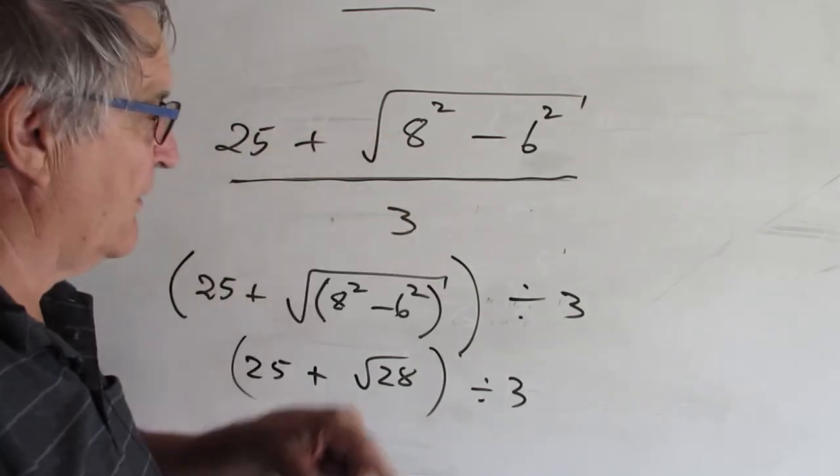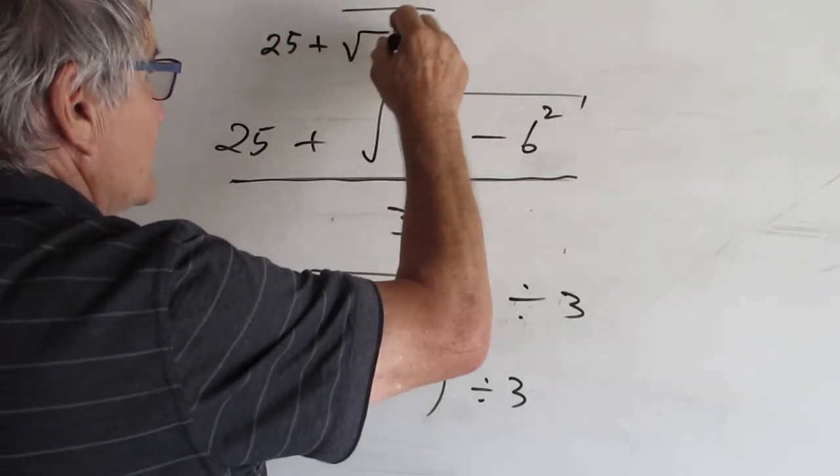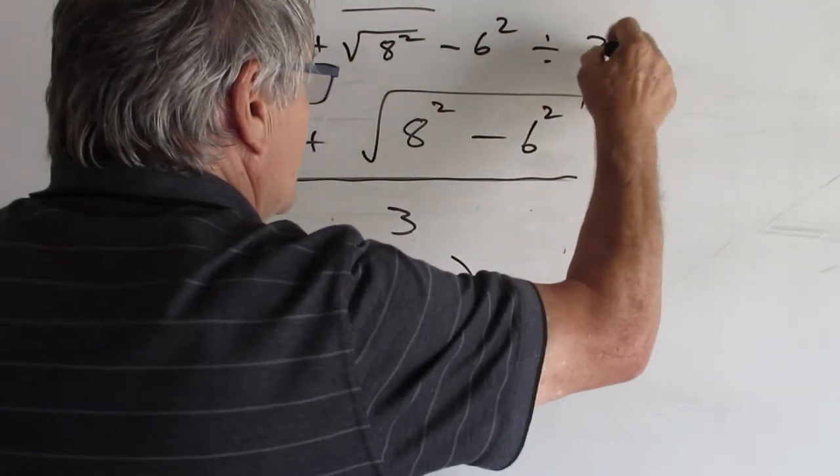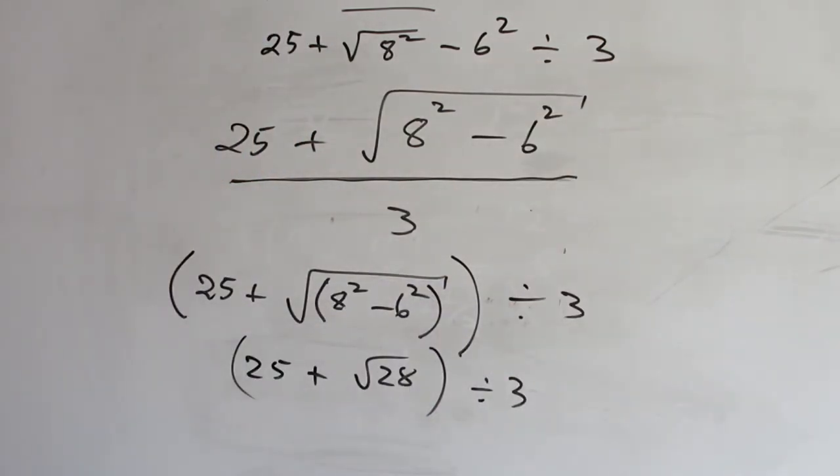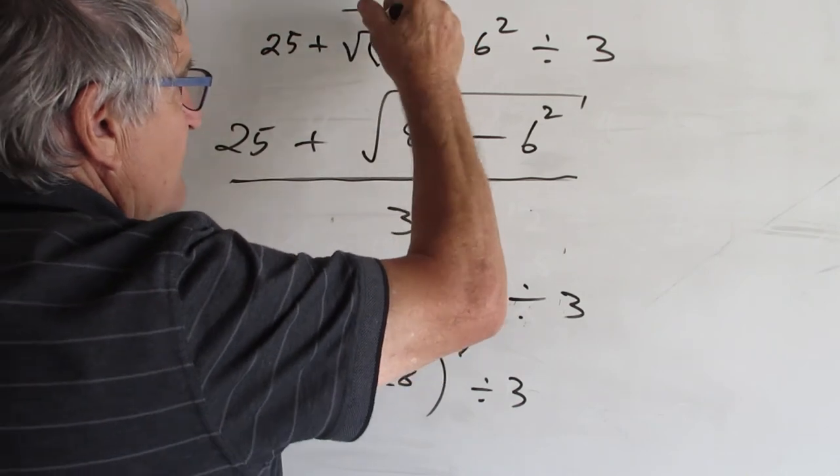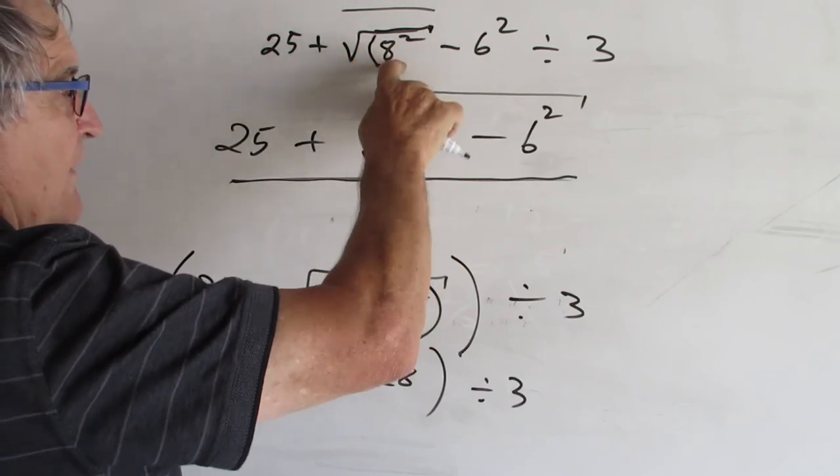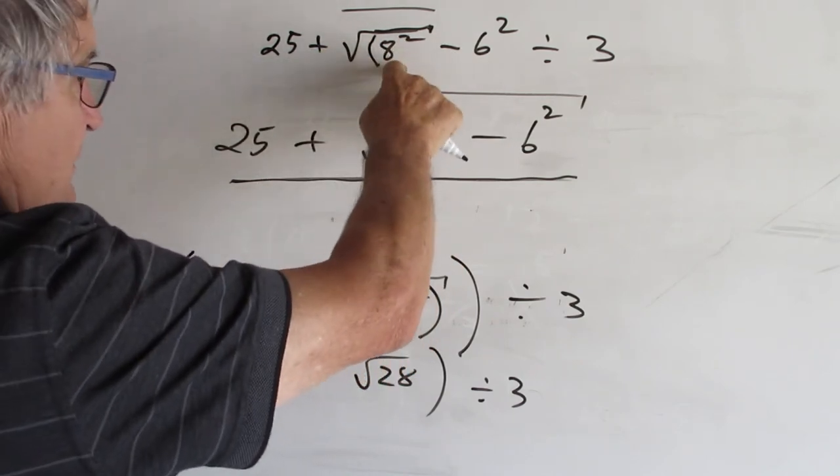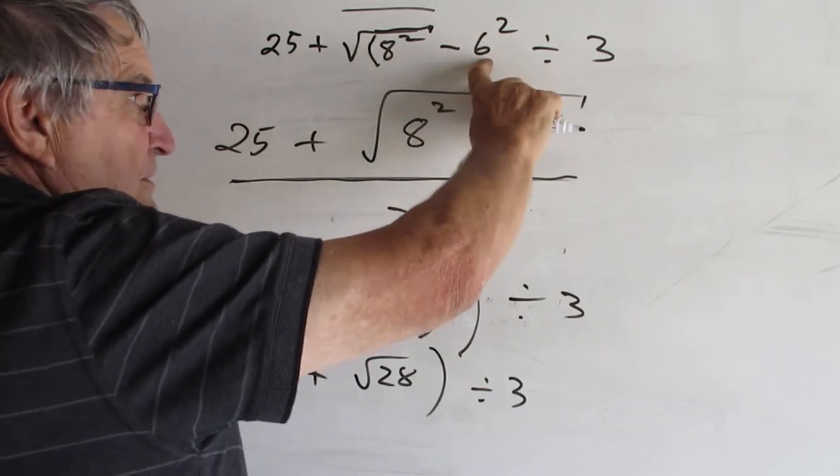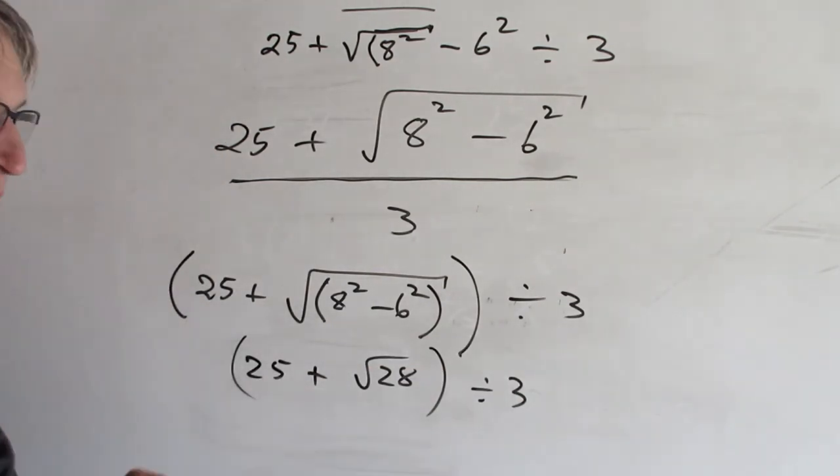You put that in the calculator as you say it, 25 plus the square root of 8 squared minus 6 squared divided by 3 is going to be one awful mess. The calculator is going to finish the square root at that point there, because it won't incorporate this. So the square root of 8 squared is 8. 25 plus 8 is 33. 33 minus 36 is negative 3 divided by 3 is negative 1. A long way away from 10. So hidden brackets are really important things to look out for.